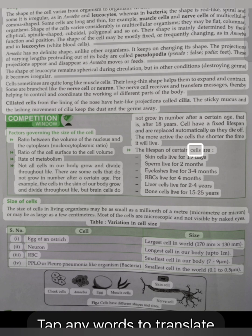The lifespan of certain cells are: Skin cells live for 19 days. Sperm live for 2 months. Eyelashes live for 3 to 4 months. RBCs live for 4 months. Liver cells live for 2 to 4 years. Bone cells live for 5 to 5 years.